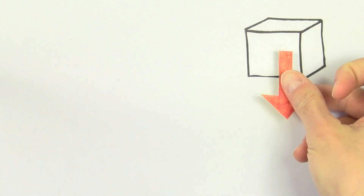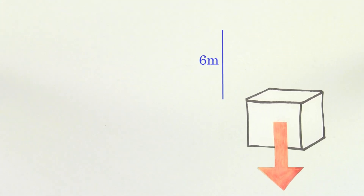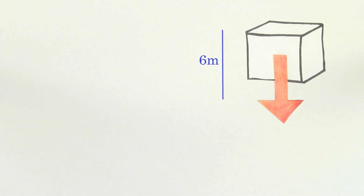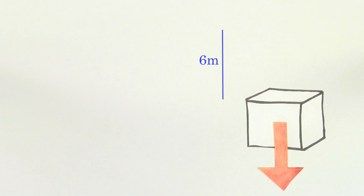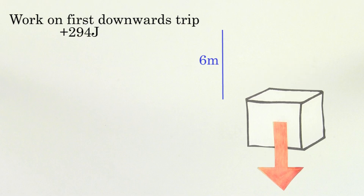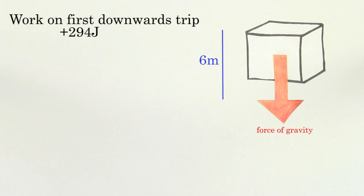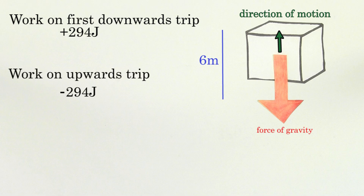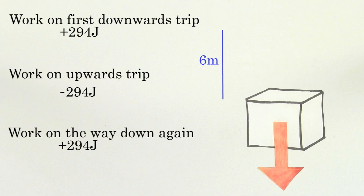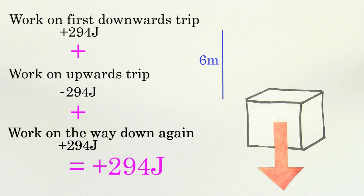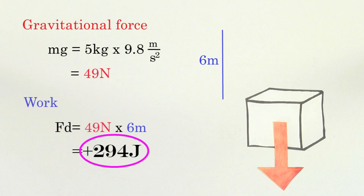Now let's start over. Say the mass again moves down 6 meters, but then it moves up 6 meters, then down again 6 meters. The work done by gravity for the first downwards trip was 294 joules. Then for the upwards trip, since the gravitational force is pointing in the opposite direction of the motion of the mass, the work done by gravity is going to be negative 294 joules. Then for the last trip downwards, the work again is positive 294 joules. That means that the total work done on the mass from gravity is still 294 joules, just like it was when the mass was lowered only once.